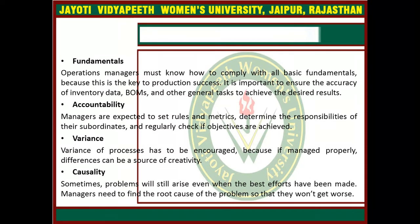Next is the accountability. The managers are expected to set rules and metrics. This determines the responsibilities of their subordinates and regularly checks if objectives are achieved. The next one is the variance. Variance of processes has to be encouraged because if managed properly, differences can be a source of creativity.